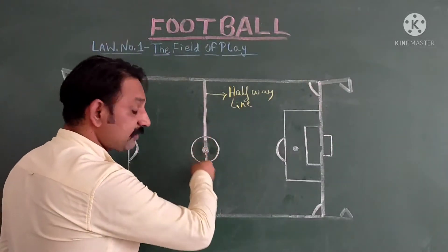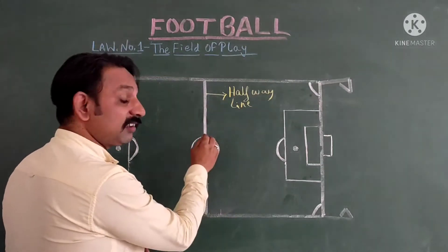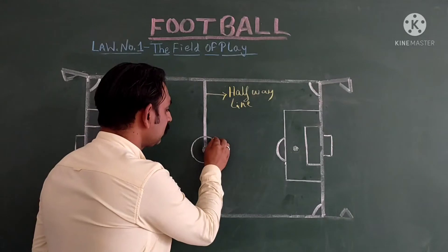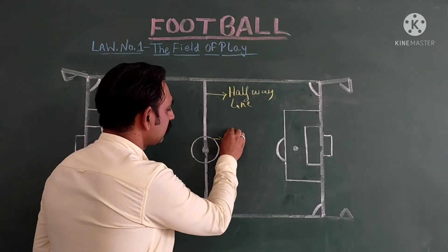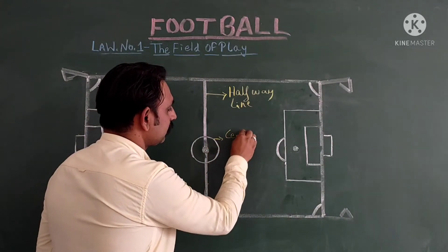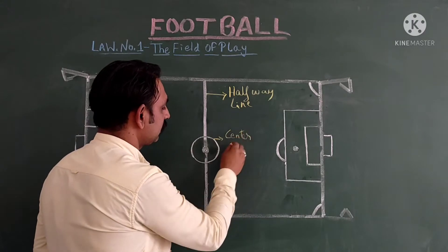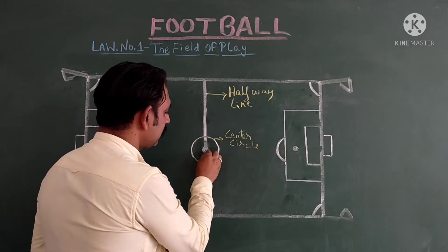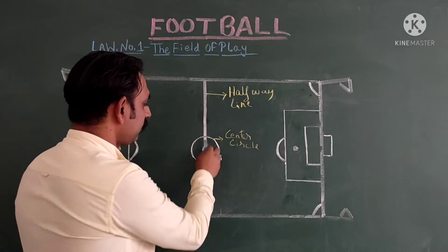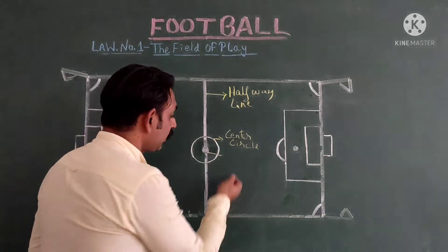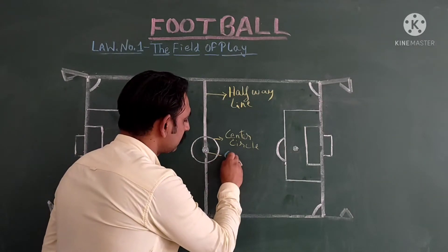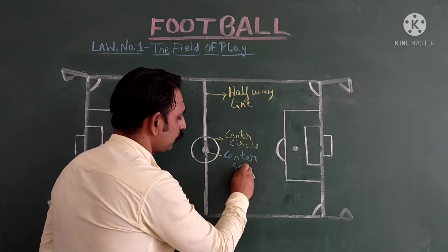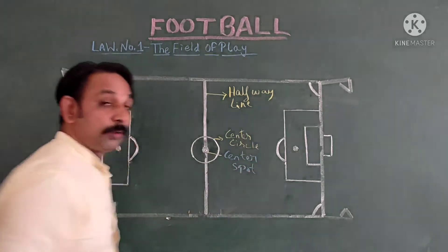There is a center circle and a center spot in the ground. This is known as the center circle, and the spot which is there in the middle of the ground is known as the center spot.